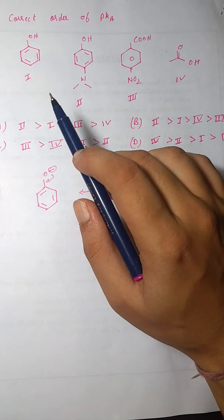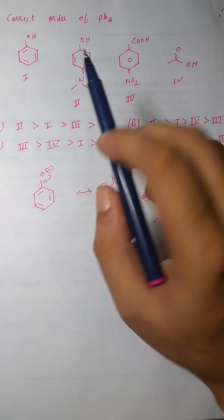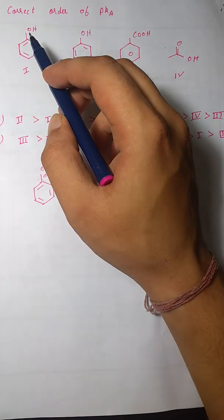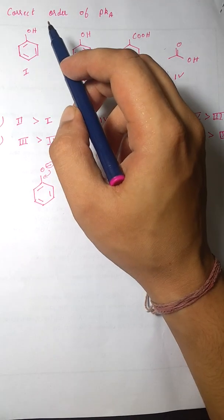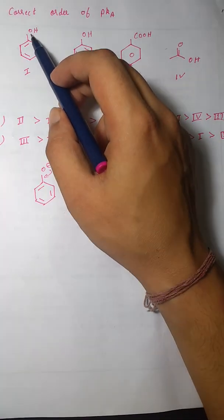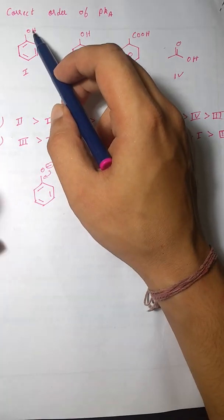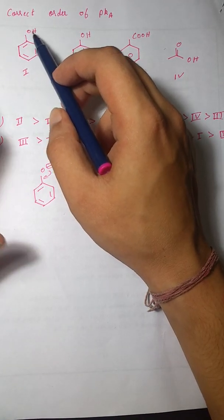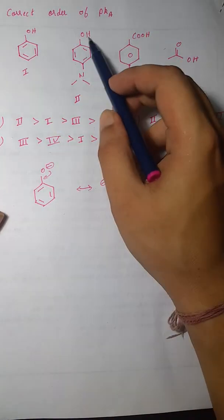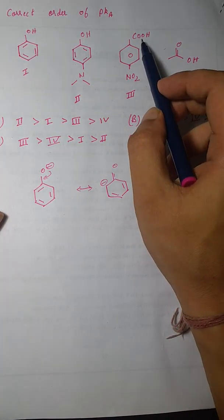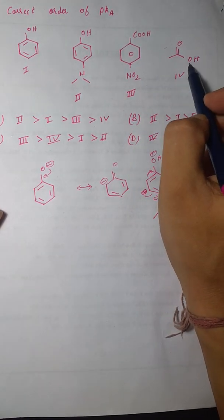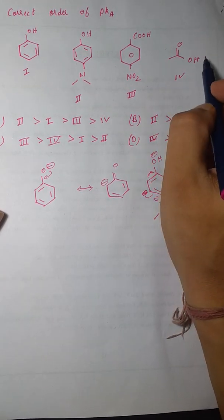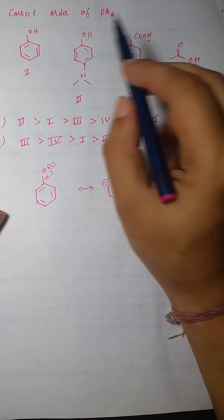There are two ways to find the acidity. First, you locate the most acidic proton. In these compounds, the OH proton is the most acidic because it has the highest polarity difference. Each of the four compounds has an OH group, so these are the most acidic protons present in the given compounds.